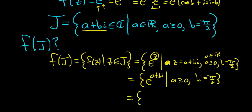So now we can use properties of exponents and write this as e to the a times e to the bi, just like we did before. And a is greater than or equal to 0, and b is pi over 2.